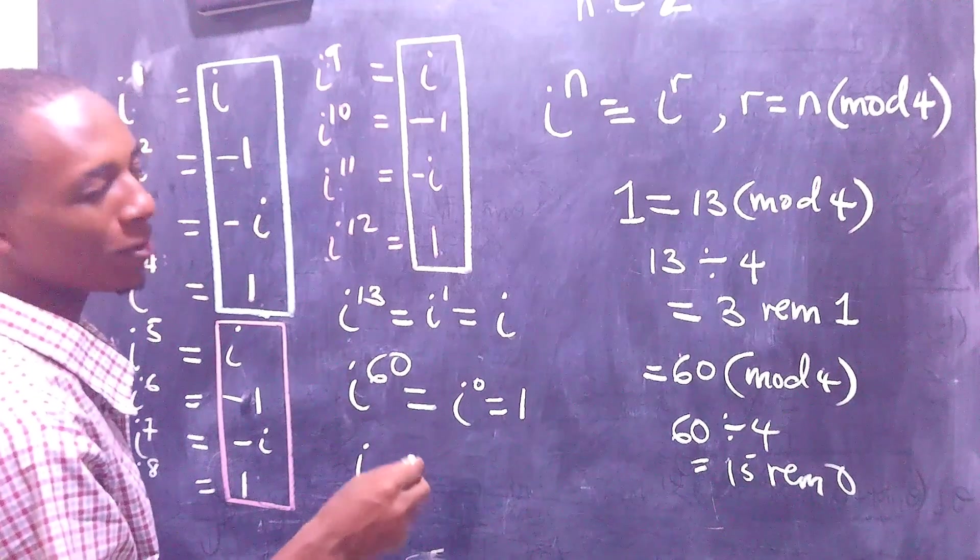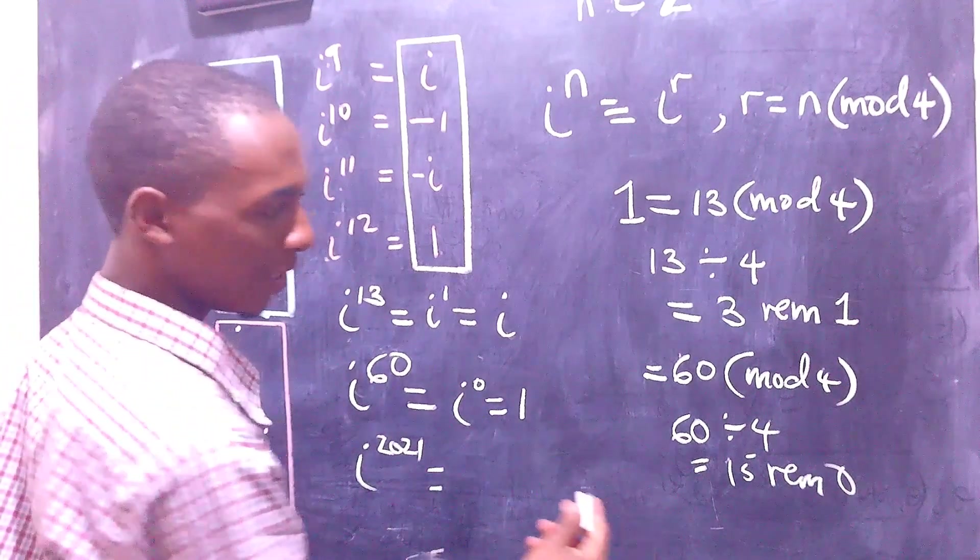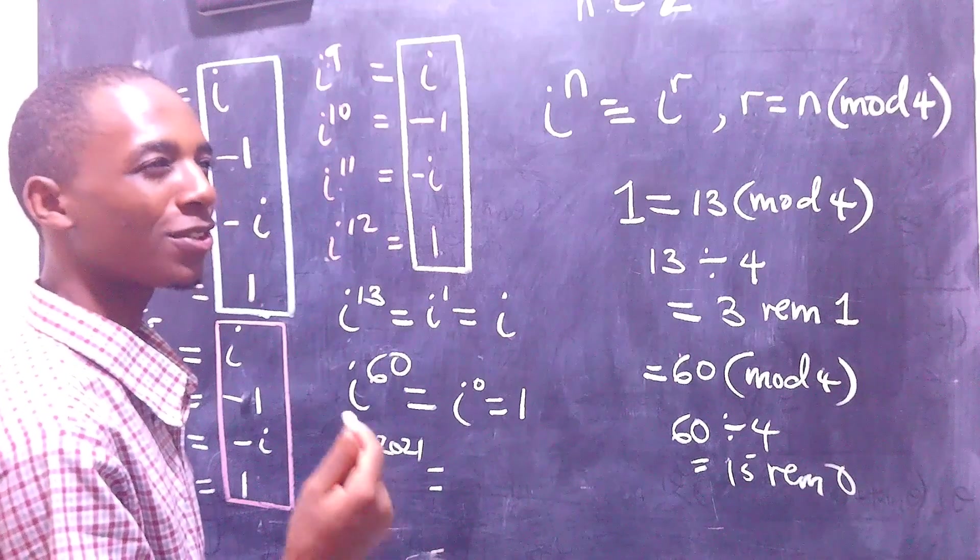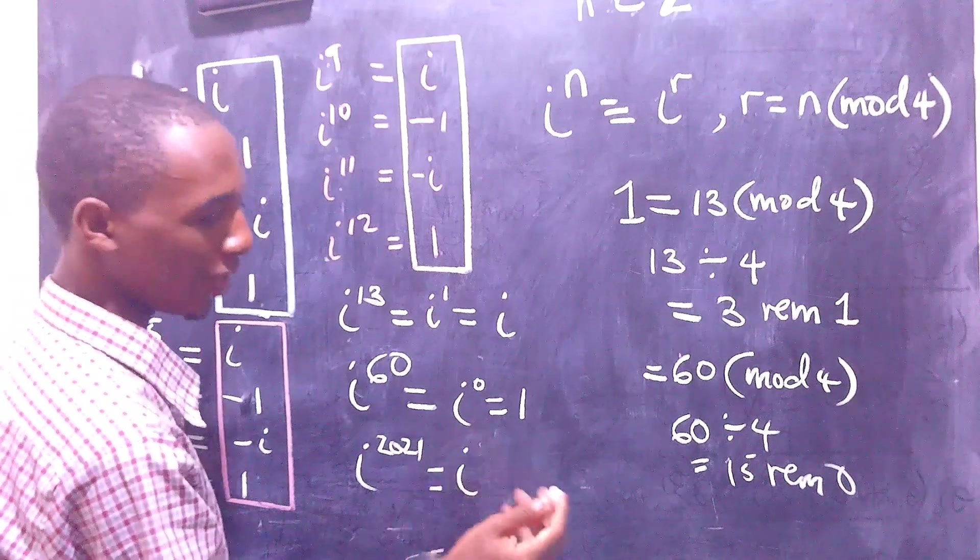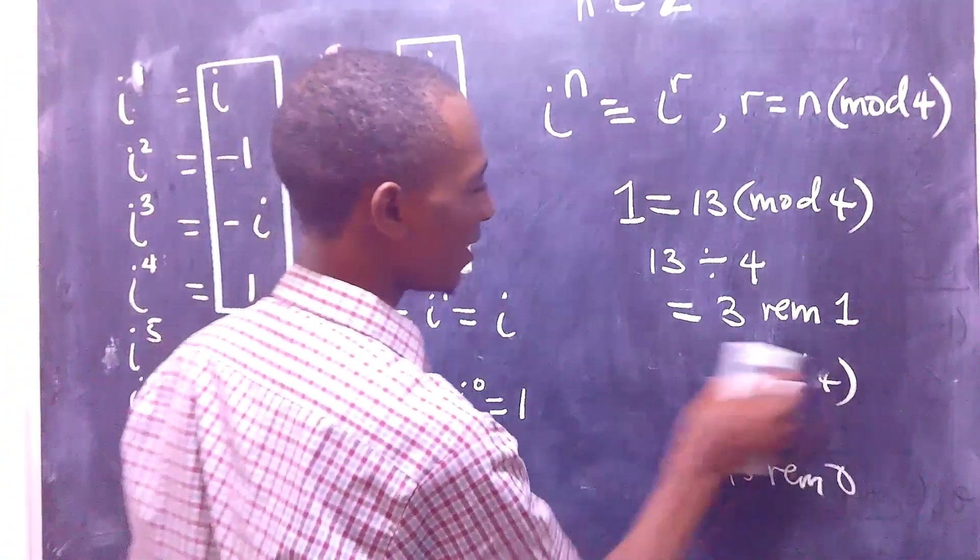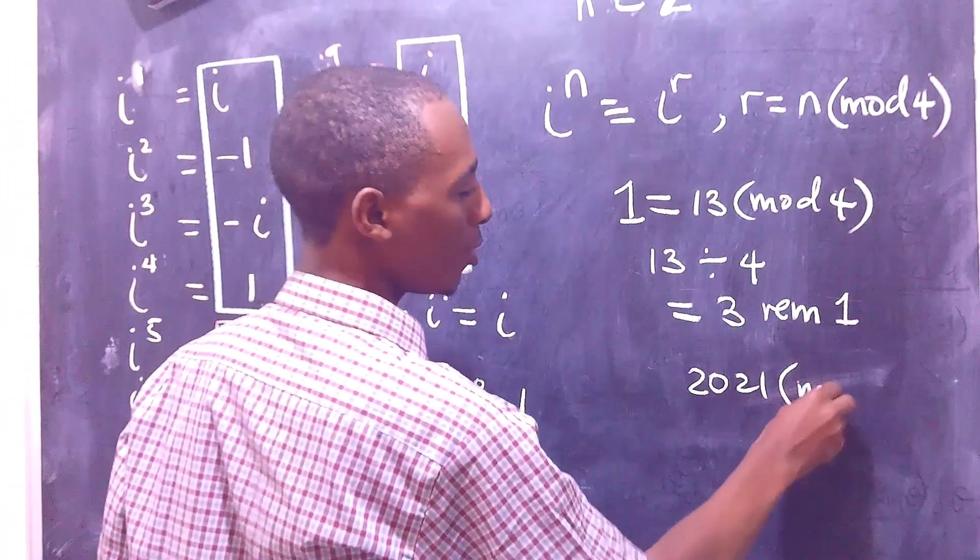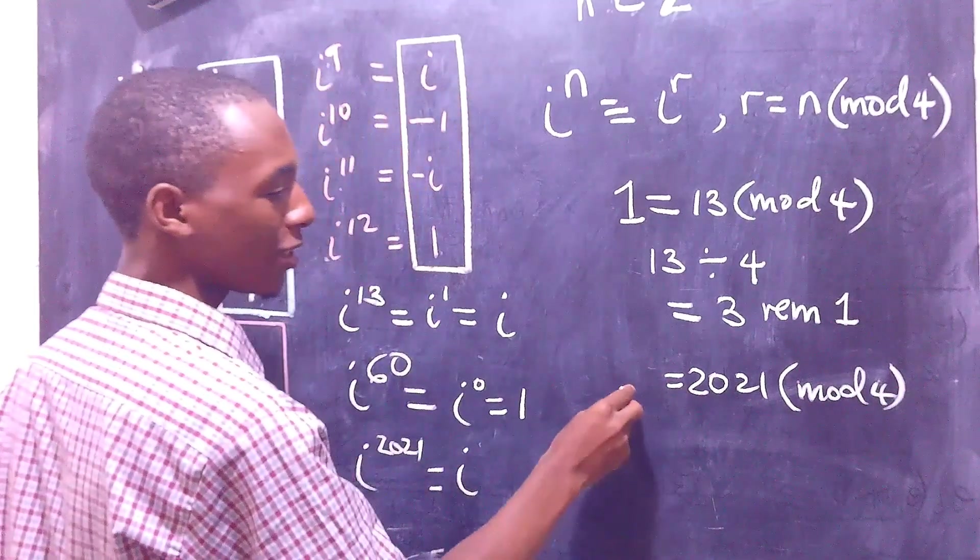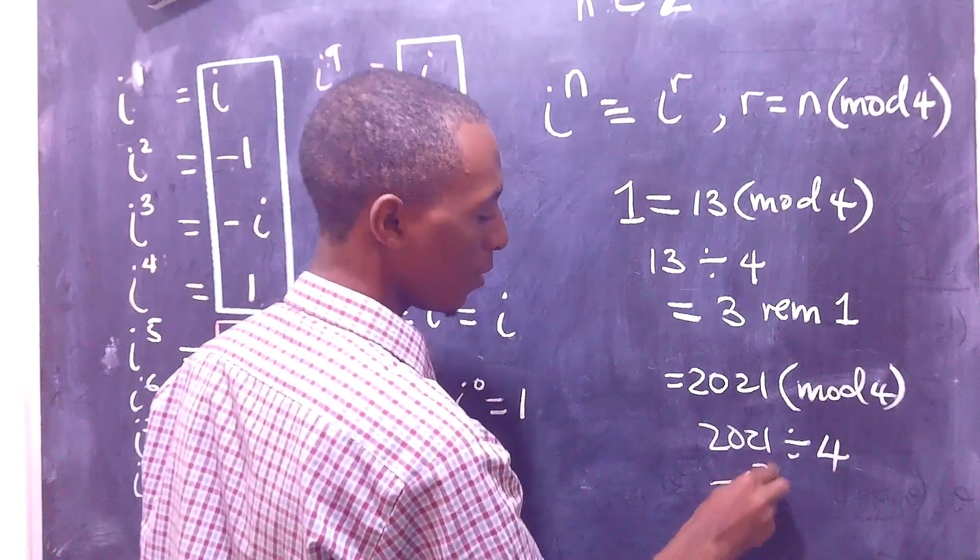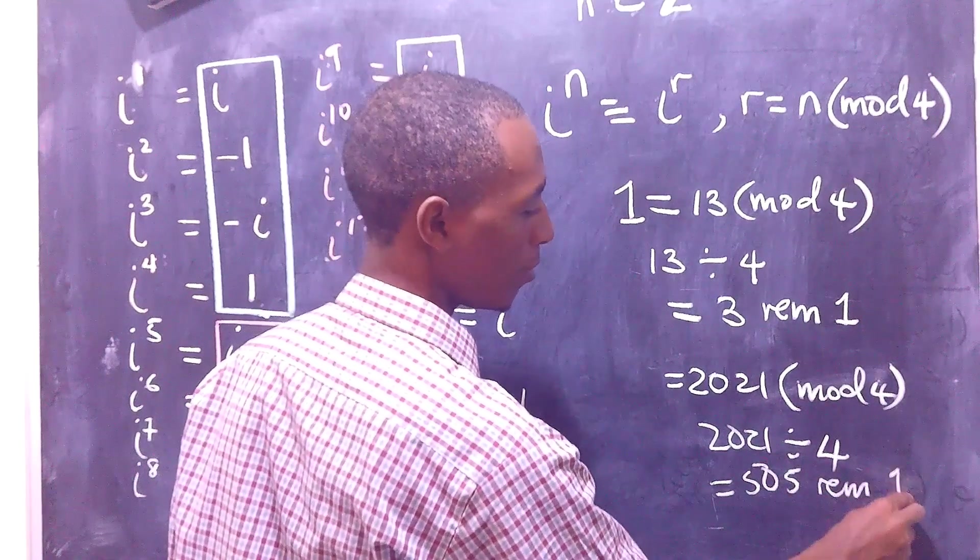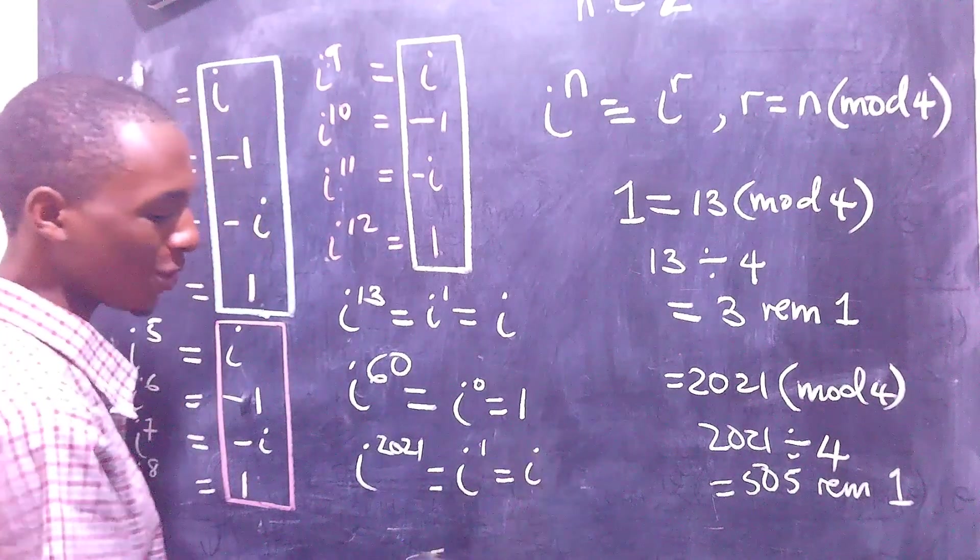Let's say i to the power 2021. So 2021 divided by 4, that's going to be 505 remainder 1. So 2021 in mod 4, I get 2021, I divide that by 4, that's going to be 505 remainder 1, so that's the same as i to the power 1, which is also i.